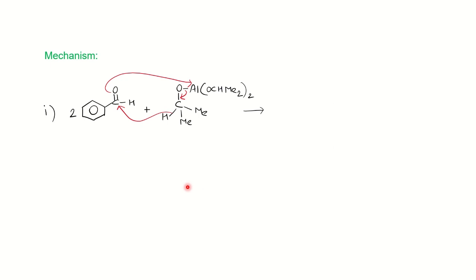Now we will see the mechanism of how this reaction takes place. Basically, one molecule of benzaldehyde reacts with one molecule of Aluminium Isopropoxide, but since two molecules are given, two molecules of product will form. The oxygen being electronegative and aluminium being electropositive makes this a very polar bond that is easy to break. When this bond breaks, it gives its electron to the carbonyl, facilitating easy hydrogen transfer to the electrophilic carbonyl carbon, while electrons from oxygen go to the electropositive aluminium.